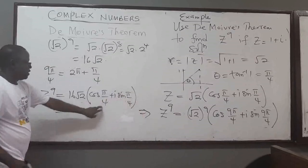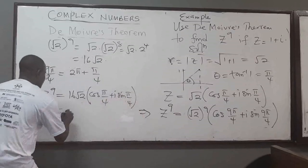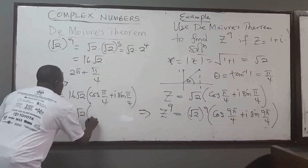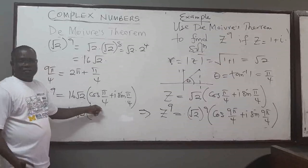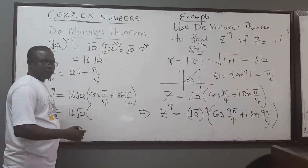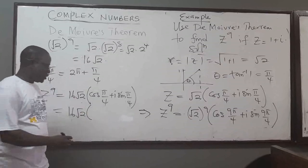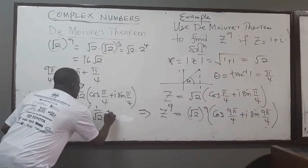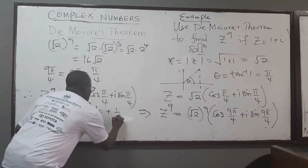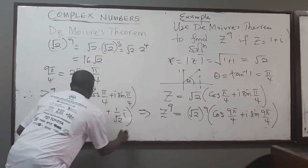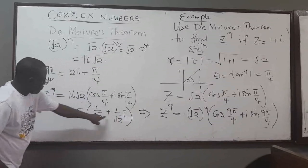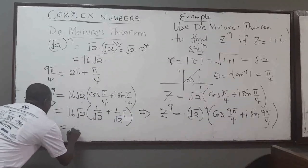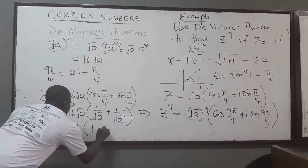We can simplify further: cos(π/4) = 1/√2 and sin(π/4) = 1/√2. So 16√2 times 1/√2 gives 16, and the √2 cancels. So finally we have 16·(1 + i). Therefore, z to the power 9 is equal to 16 plus 16i.